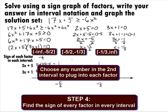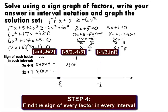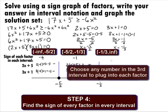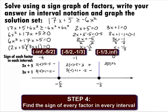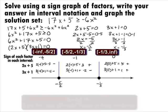Moving to the second interval of negative 5 halves to negative 1 third, choosing negative 1: 2 times negative 1 plus 5 equals 3, so the first factor is positive. Plugging negative 1 into the second factor: 3 times negative 1 plus 1 equals negative 2, so that factor is negative in the second interval. For the last interval of negative 1 third to infinity, choosing 0: 2 times 0 plus 5 equals 5, so the first factor is positive. And 3 times 0 plus 1 equals 1, so the second factor is also positive in that last interval.